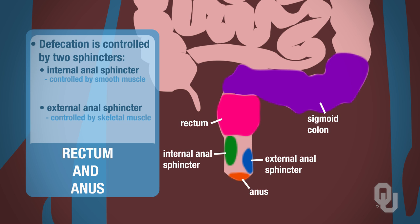Skeletal muscle is voluntary — you can control skeletal muscle. Smooth muscle, however, is involuntary, so there is no controlling involuntary smooth muscles. So it's nice that we have skeletal muscle that enables us to control our own defecation. Without that skeletal muscle, we wouldn't be able to control when we actually defecated.